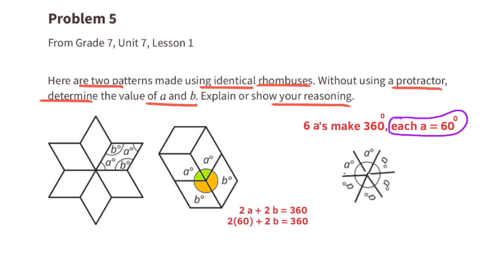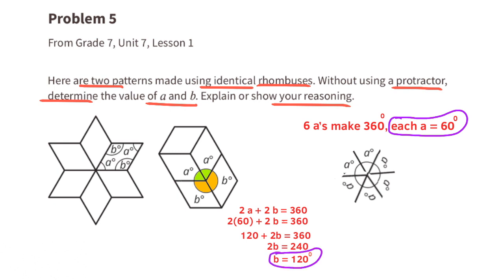This also shows that two A's plus two B's equals 360 degrees. Since each A is 60 degrees, two A's equal 120 degrees. Writing the equation: 120 plus 2B equals 360. Subtracting 120 from both sides gives 2B equals 240. Dividing both sides by 2 gives B equals 120. So angle B is 120 degrees.